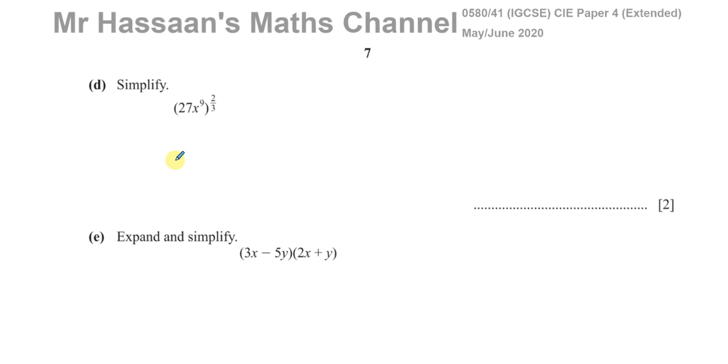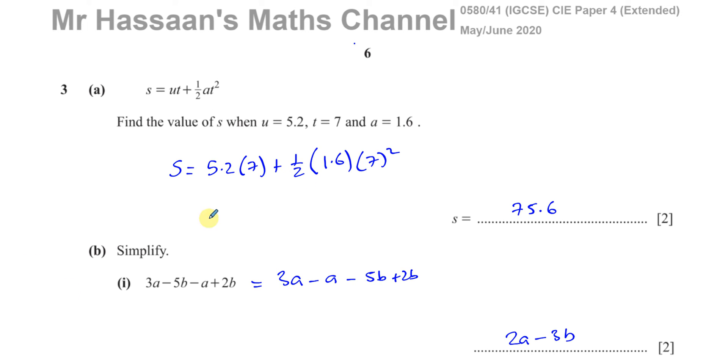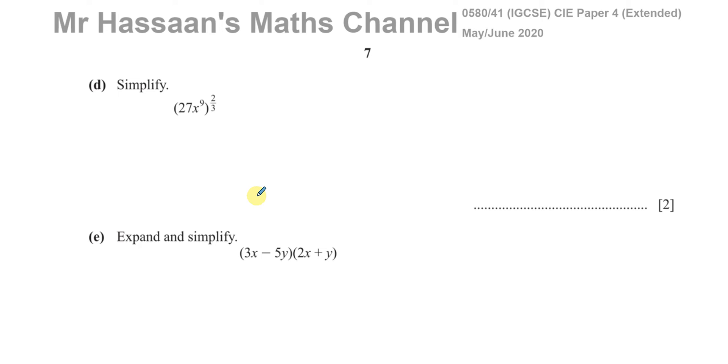Is there another question here? Yes, there's part D. This is question number 3 part D. Simplify 27X to the power of 9 to the power of 2 thirds. For this question, we're going to use the laws of indices, the rules of indices. The way I like to do it for these types of questions is I like to take the numbers and take them separately from the letters. So this is 27 to the power of 2 thirds, and then I have X to the power of 9 to the power of 2 thirds.